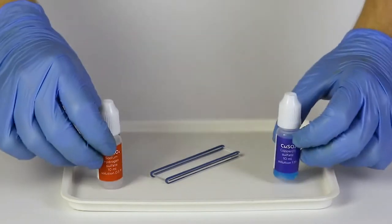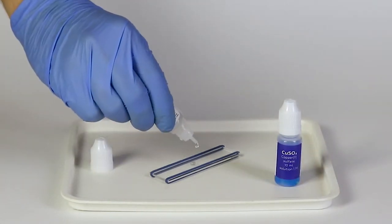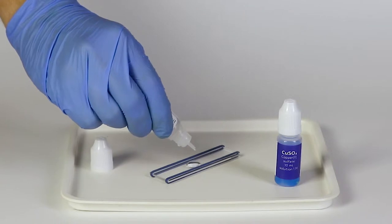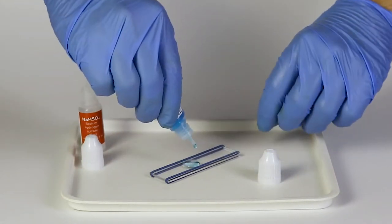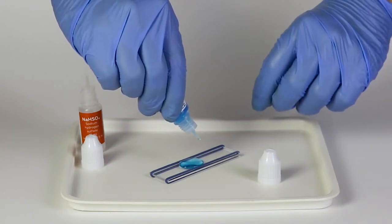Then take the sodium hydrogen sulfate solution and carefully put 10 drops of it onto the glass slide. Next, add 30 drops of the copper sulfate solution to the sodium hydrogen sulfate on the glass slide.